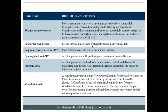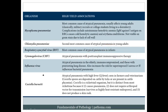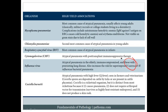Chlamydia pneumoniae is the second most common cause of atypical pneumonia in young adults. RSV is the most common cause of atypical pneumonia in infants. CMV is the classic cause in post-transplant immunosuppressed patients. Influenza is a classic cause in the elderly and those with pre-existing lung disease or immunocompromise. Importantly, influenza increases the risk for secondary bacterial pneumonia — the vast majority of influenza pneumonia deaths are due to superimposed secondary bacterial pneumonia, with Staph aureus being the most common cause.